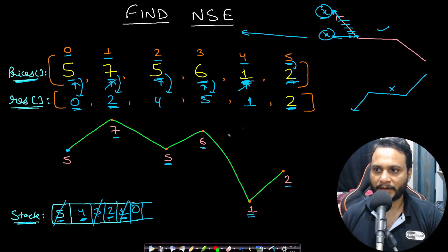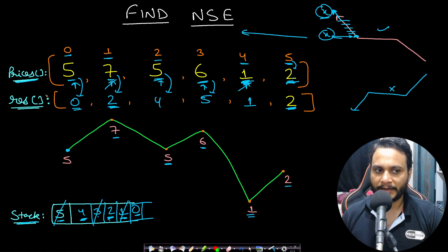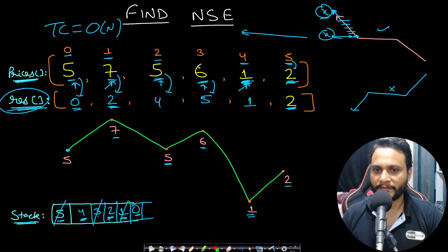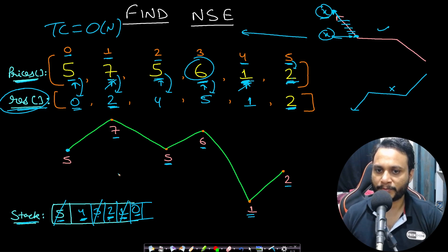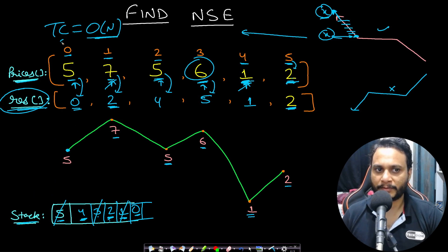The final result array is returned as the answer. We parse the prices array only once, so the time complexity is O(n) — each item is pushed into the stack exactly once and popped at most once and never repushed. The space complexity is also O(n) because in the worst case all items are in the stack simultaneously.